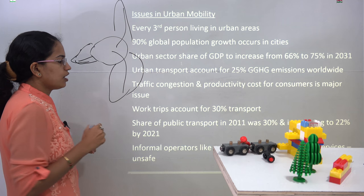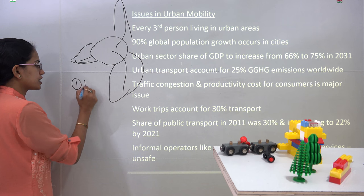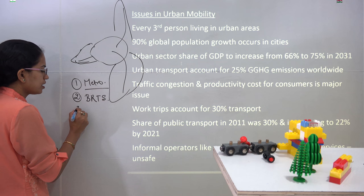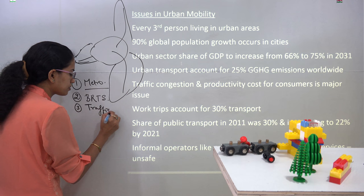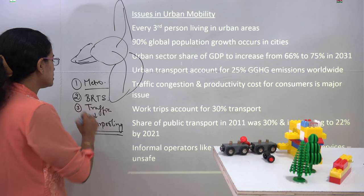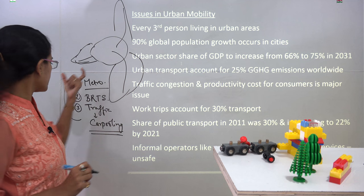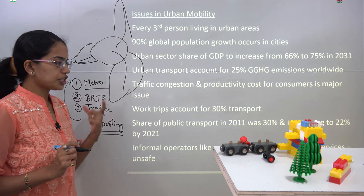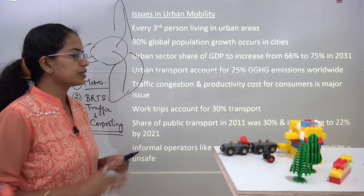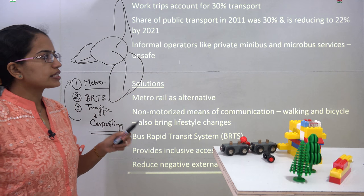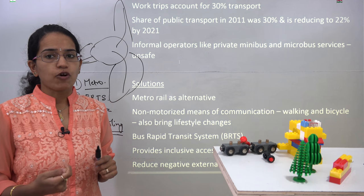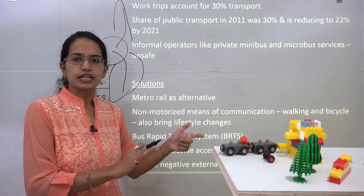To address these issues, possible solutions include devising a metro line, moving through BRTS (Bus Rapid Transport System), and promoting carpooling to solve traffic congestion. Some nations promote carpooling where metro or BRTS is not feasible. The share of public transport in India was around 30 percent in 2011, expected to drop to only 22 percent by 2021, as more people opt for their own vehicles, further increasing traffic problems.